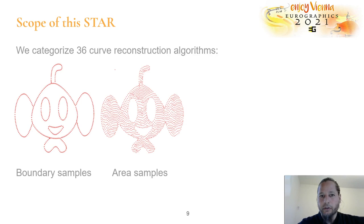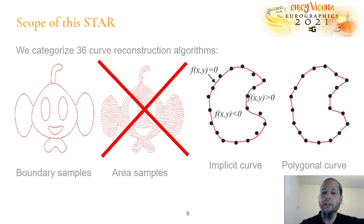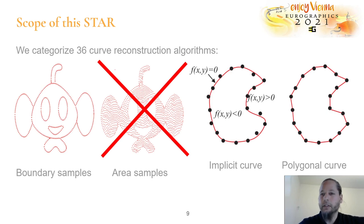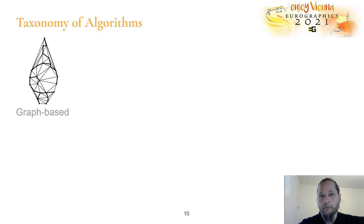We evaluate 36 curve reconstructions and categorize them. One way to reconstruct a curve is either going to the boundary samples or taking a contour of area samples, which we leave out here. Another classification: you can define an implicit function and construct implicit curves, which is popular in 3D, or a polygonal curve. We restrict the scope of the STAR to polygonal curves, as there is no source code for implicit algorithms in 2D. Some algorithms may fit in several categories, so we put them where they fit best but will also mention them in other categories.